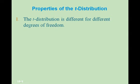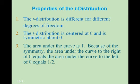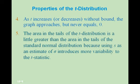Let's recall the properties of the t-distribution. It is different for different degrees of freedom, centered around 0 and symmetric about 0. The area under the curve is 1, and by symmetry, the area to the right of 0 equals the area to the left of 0, which is one half. As t increases or decreases without bound, the graph approaches but never equals 0. The area in the tails of the t-distribution is a little greater than in the standard normal distribution, because using s as an estimate of sigma introduces more variability.